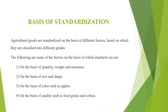Basis of standardization: agricultural goods are standardized on the basis of different factors — on the basis of quantity, weight and measures; on the basis of size and shape; on the basis of color, such as apples; and on the basis of quality, such as food grains and cotton.